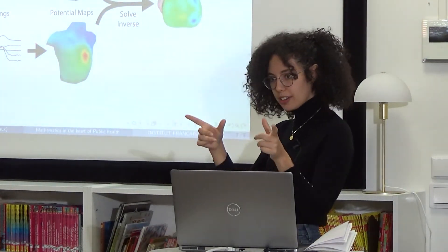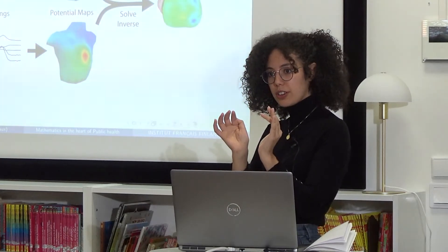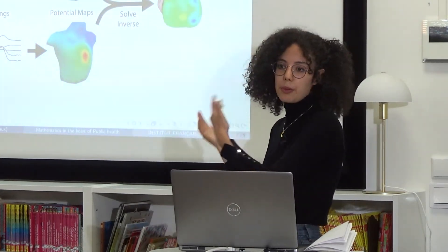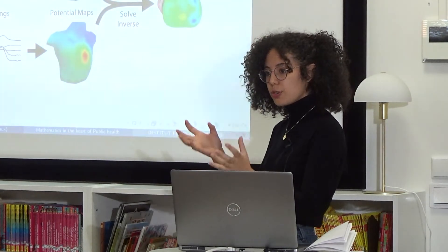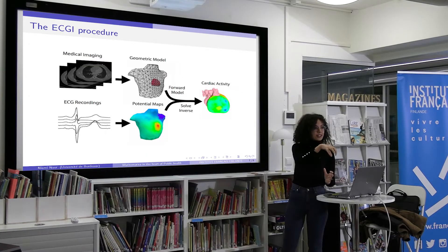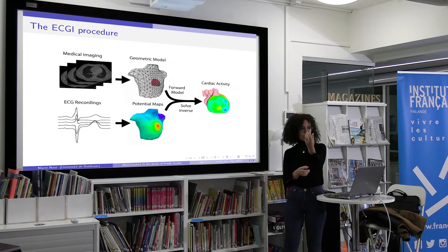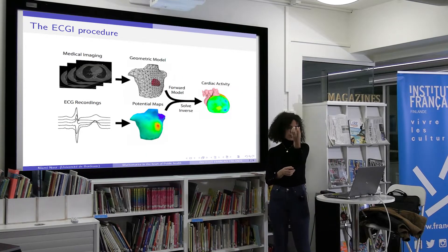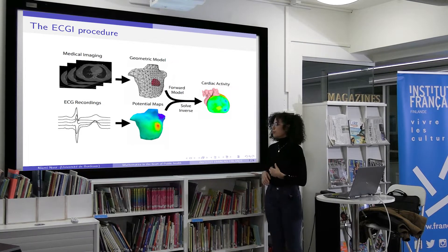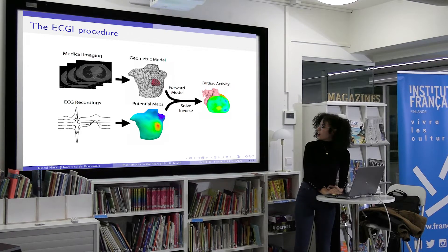This is called an inverse problem in mathematics. By solving it, and using the information provided by the cardiologists and hospital, we can actually recover a cardiac activity map that shows what happens on the surface of the heart - not just on the surface of the torso. From measurements on the exterior, we can extract information from inside the domain, because the heartbeat originates from inside and propagates through the torso.